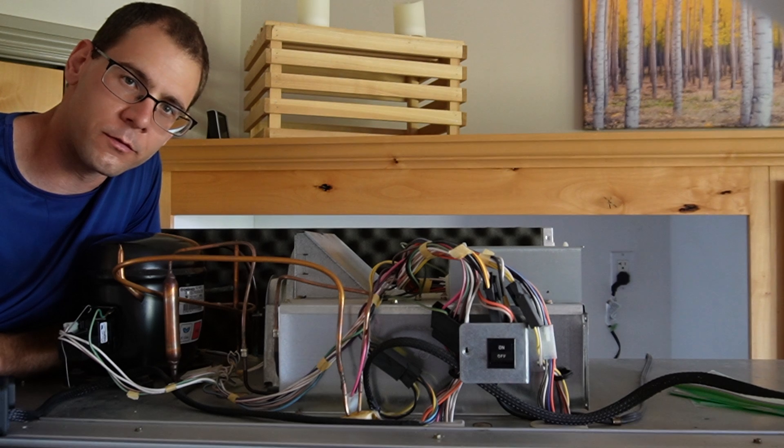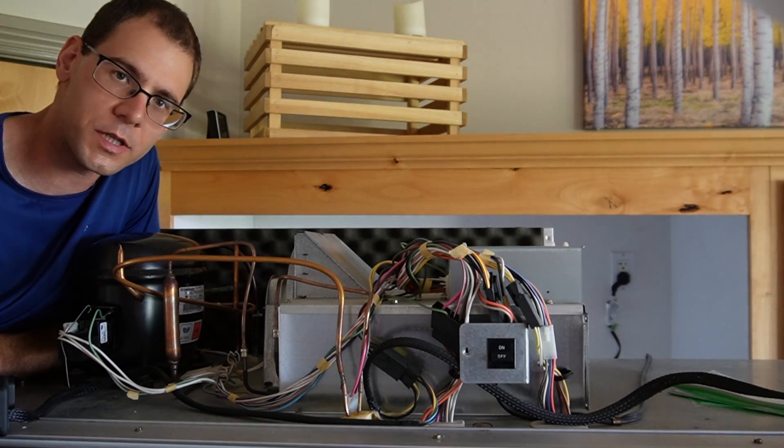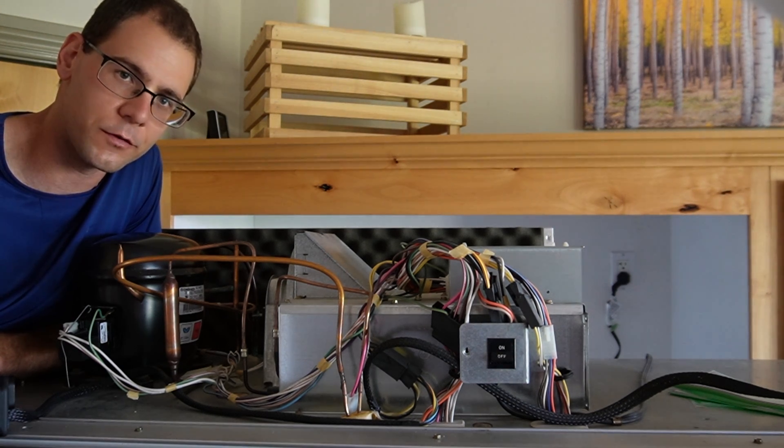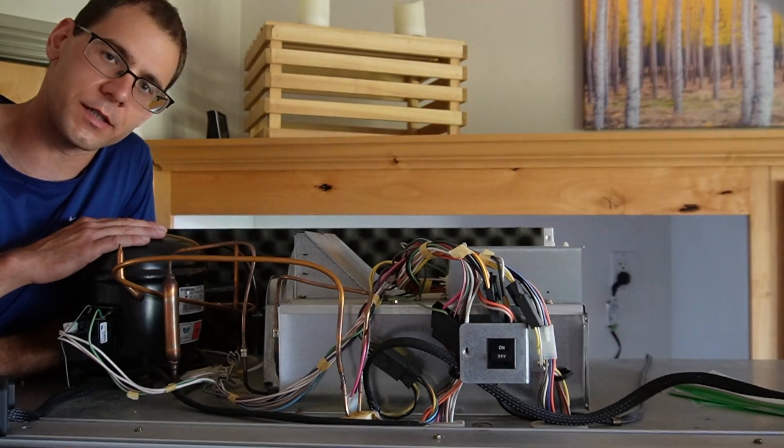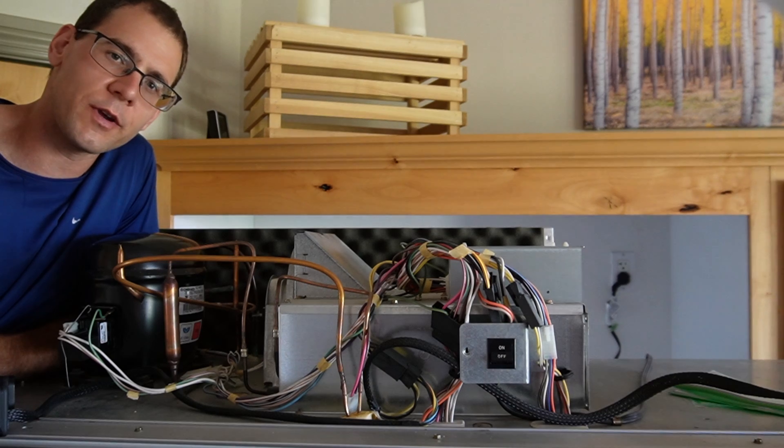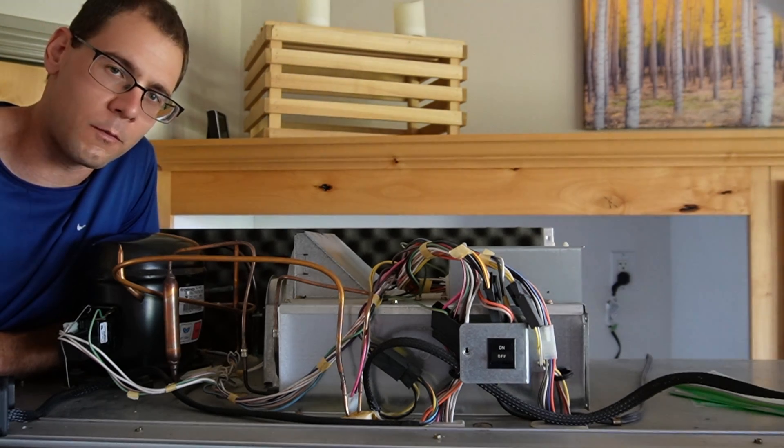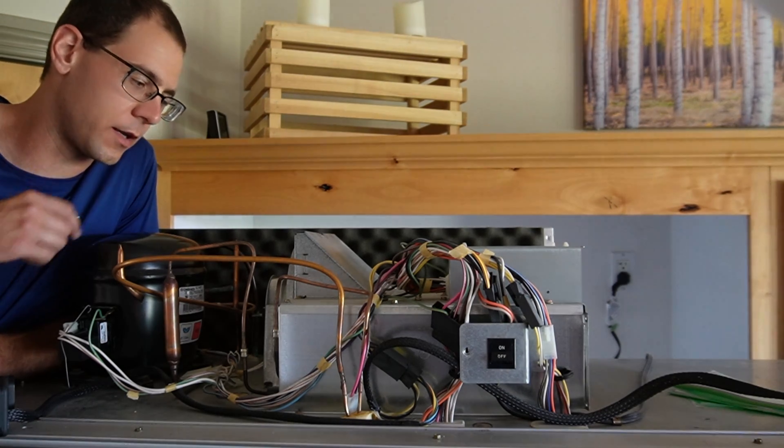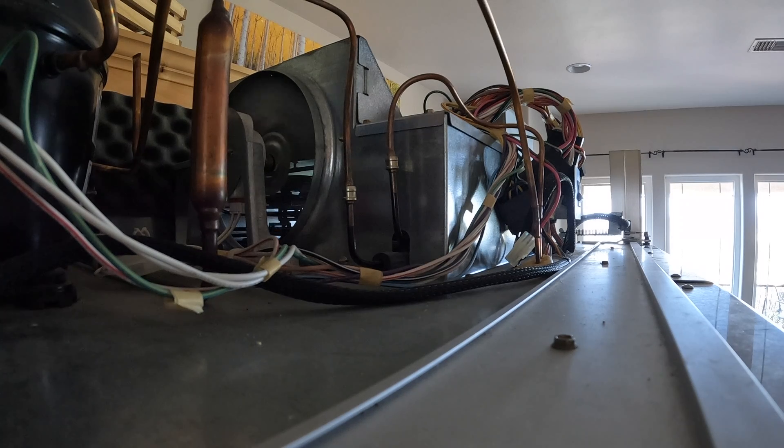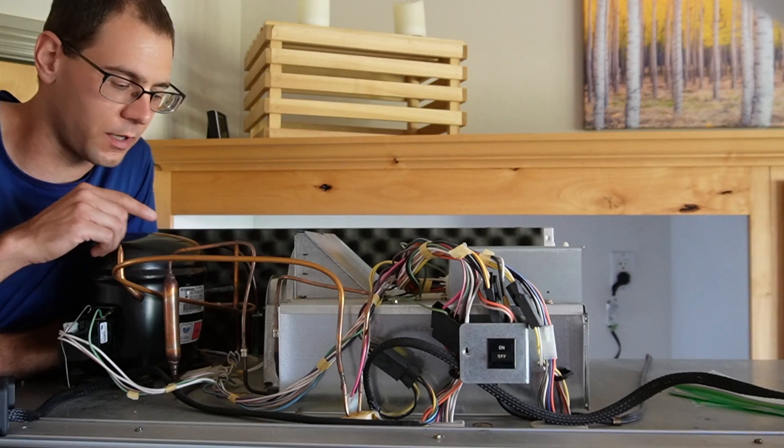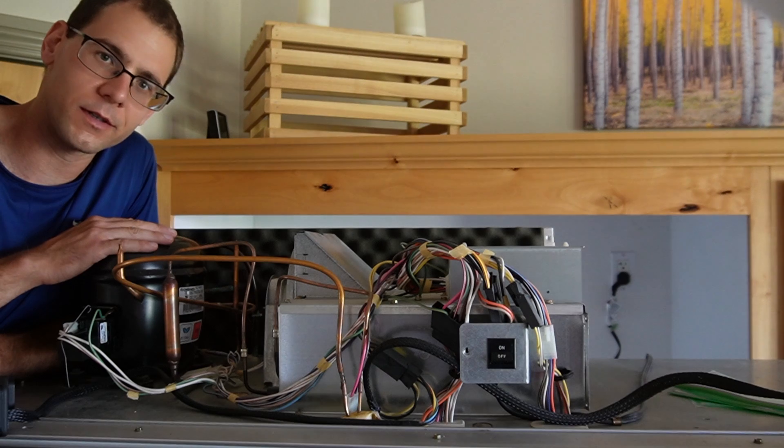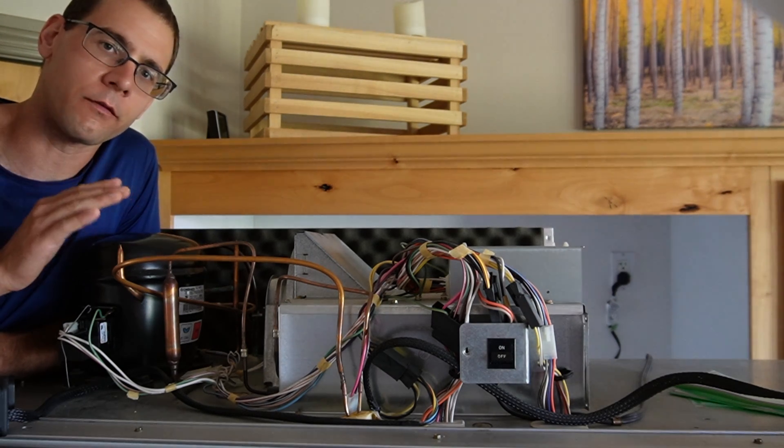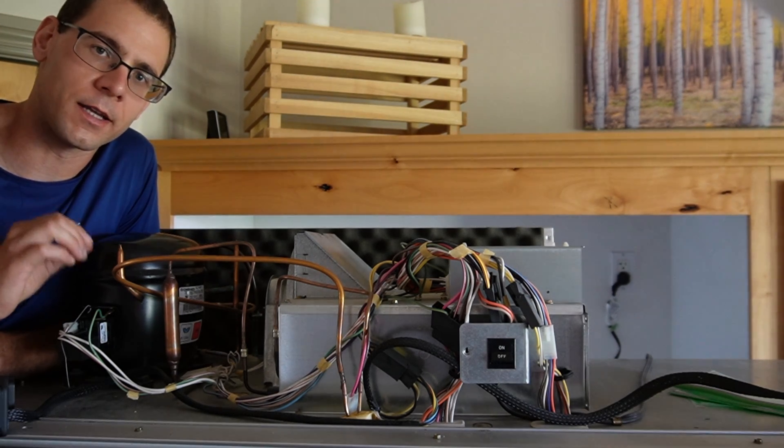I've taken the shroud off at the top of the refrigerator to expose the components we need to investigate. The main component is right here, this is the compressor. On your refrigerator it could be on the bottom, but in almost all cases it's located right next to the condenser fan which is spinning right now. When the condenser fan is spinning, this compressor should be running, but it's not. It's not warm, it's not vibrating, it's clearly off.